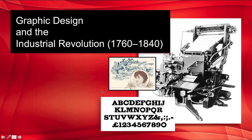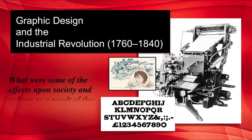Welcome to the second half of Chapter 9, Graphic Design and the Industrial Revolution. The Industrial Revolution first occurred in England between 1760 and 1840. This was a time of radical change for society. Before the perfection of the steam engine by James Watt around 1780, animal and human power were the primary sources of energy. The Industrial Revolution changed all that. Consider what were some of the effects upon society and culture as a result of the Industrial Revolution.